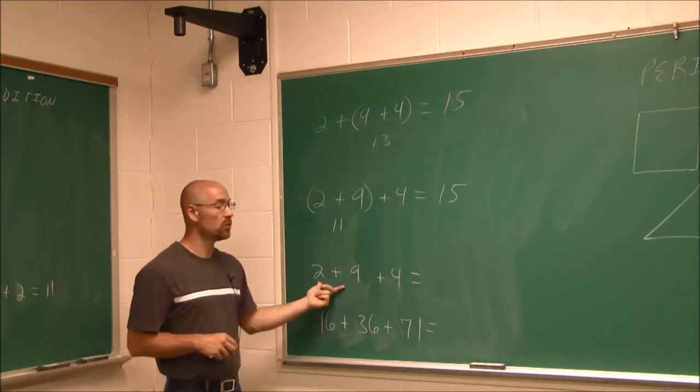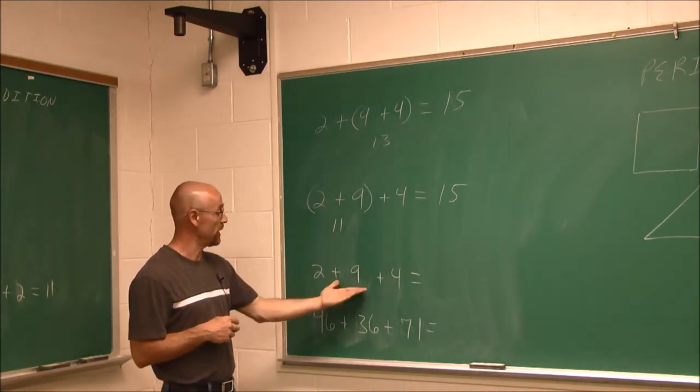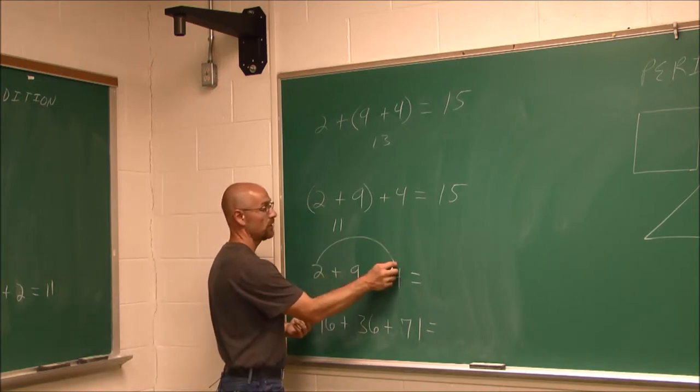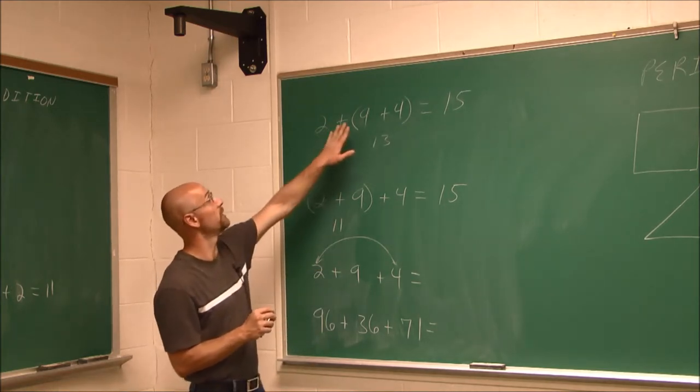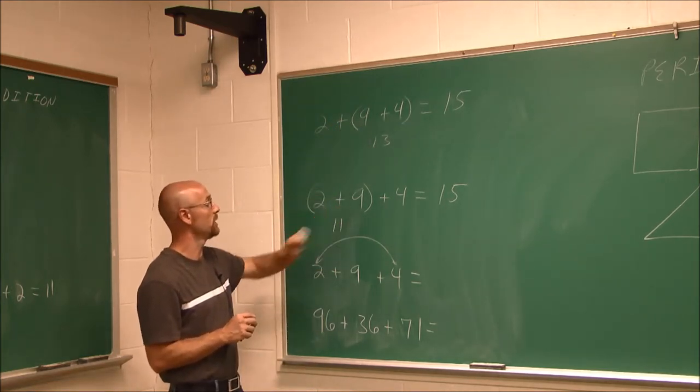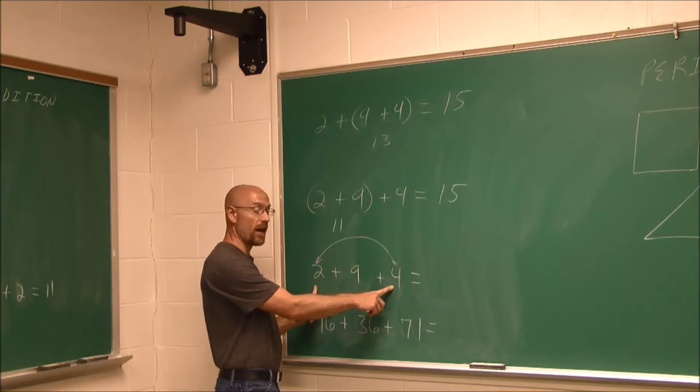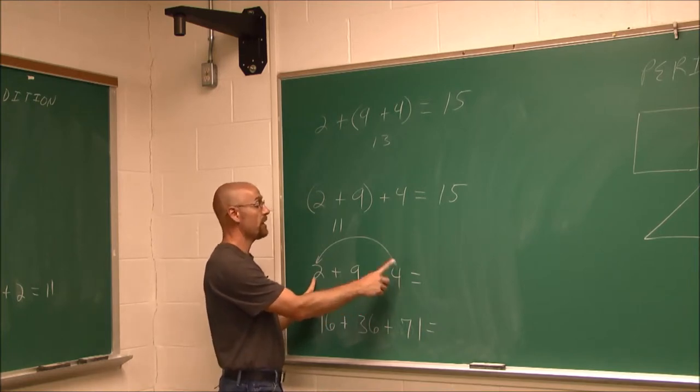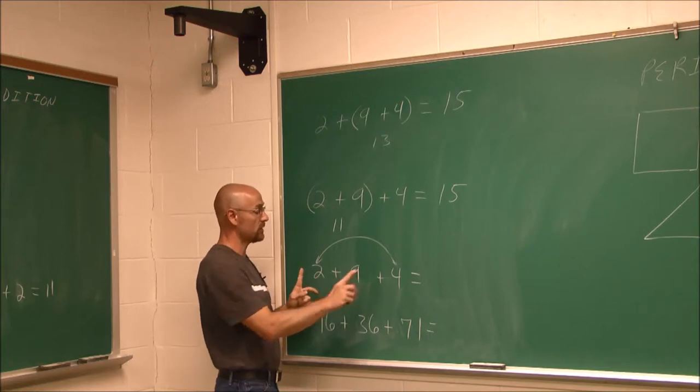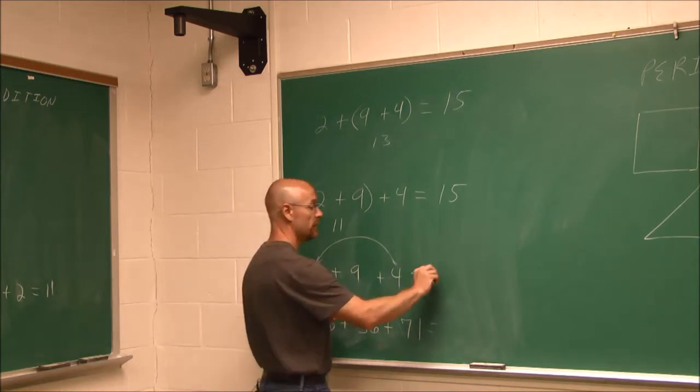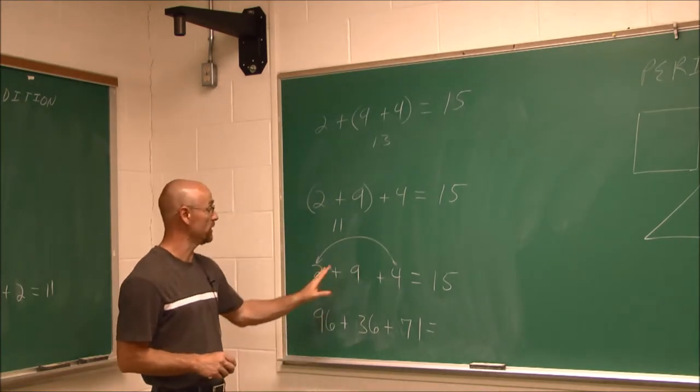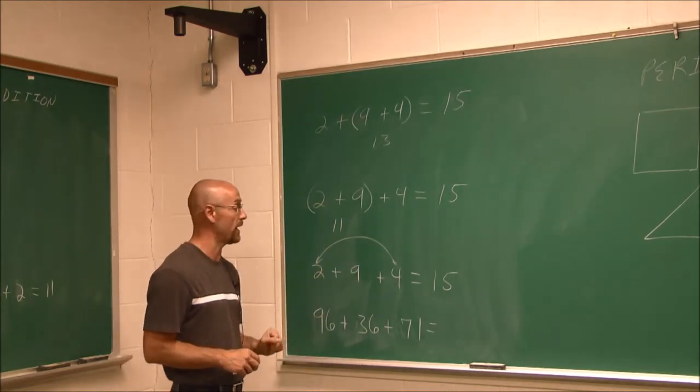Now, I'm going to do one more example of the associative property. What if I wanted to add 2 plus 4 first? What would happen if I added the 2 and 4 first? Well, 2 plus 4 is 6. Now we can add the 9, and we get 6 plus 9 is still 15. So that shows that every combination that we added, we got the same sum.